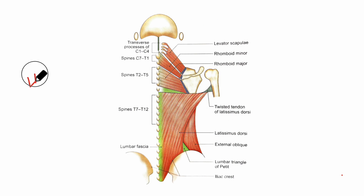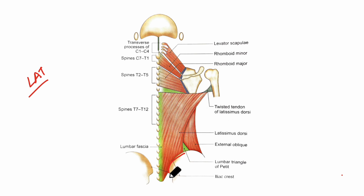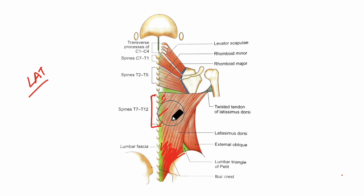Next let's learn about the latissimus dorsi muscle in detail. Looking at its origin: the latissimus dorsi muscle originates from the posterior one-third of the outer lip of the iliac crest. It also originates from the posterior layer of the lumbar fascia, from the spines of T7 to T12, and also from the inferior angle of the scapula.